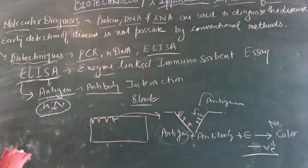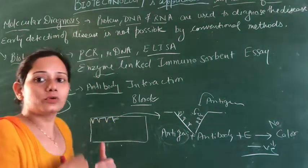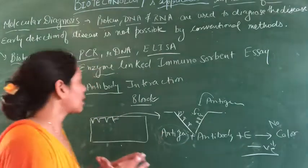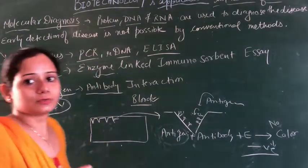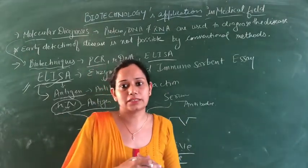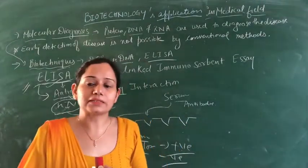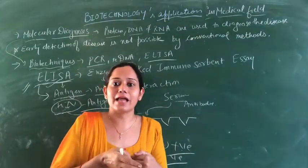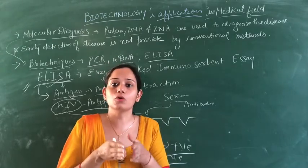So with the ELISA test, we can determine whether a suspected AIDS patient has the disease or not. In summary, molecular diagnosis methods — PCR, recombinant DNA technology, and ELISA — allow us to diagnose any disease early, even when the pathogen's concentration is low in the body.